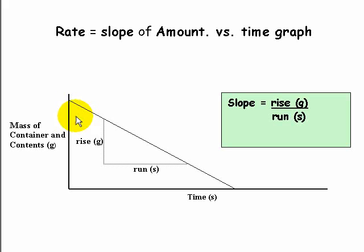We can find the rate of this reaction by plotting the data on a graph. If we put the mass of the container and contents on the y-axis and time on the x-axis, we can get an idea of how fast the reaction is by the slope of the line. If we take the rise over the run, that'll give us an indication of the rate.